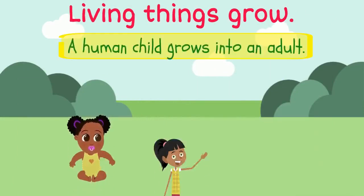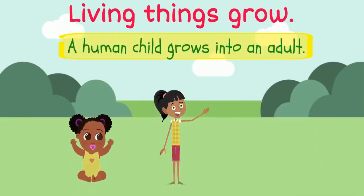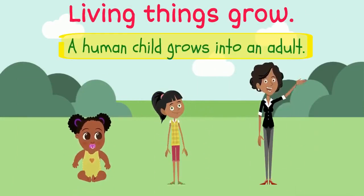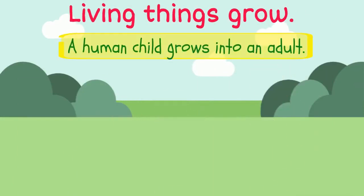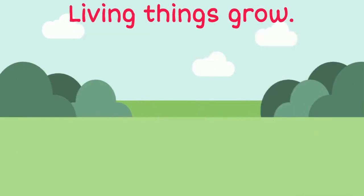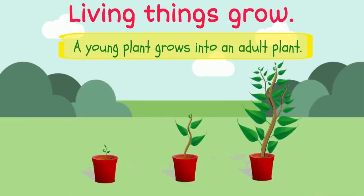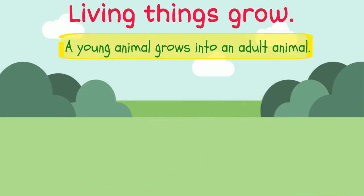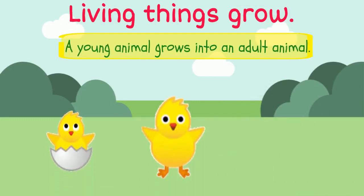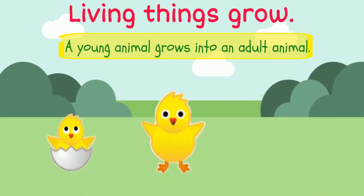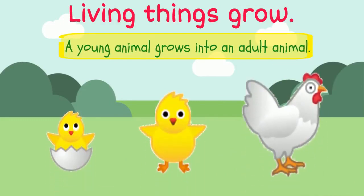Living things grow. A human child grows into an adult. In the same way, a young plant grows into an adult plant, and a young animal grows into an adult animal.